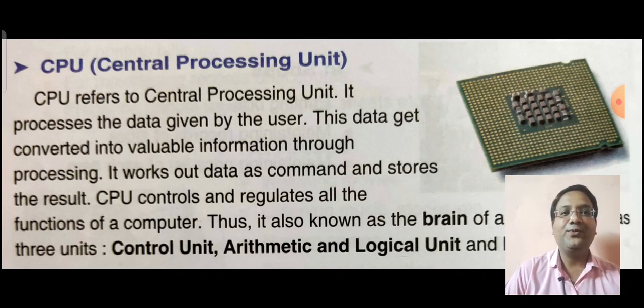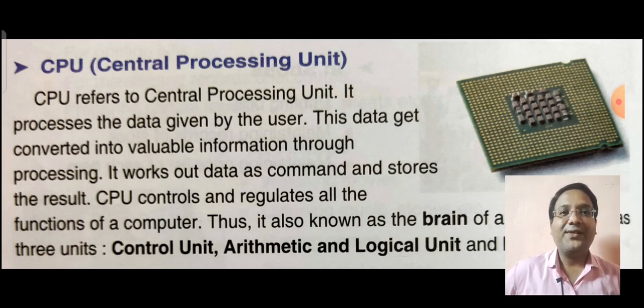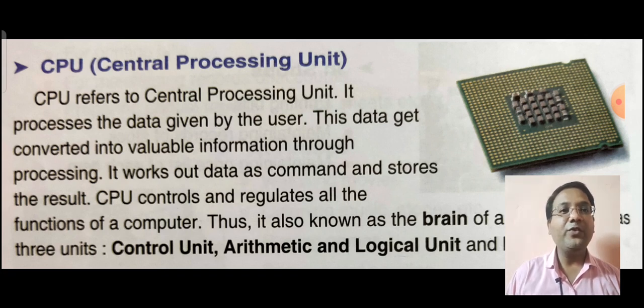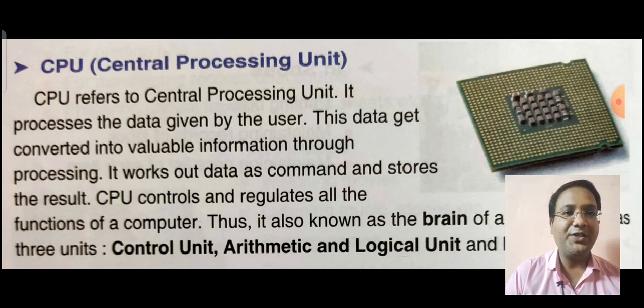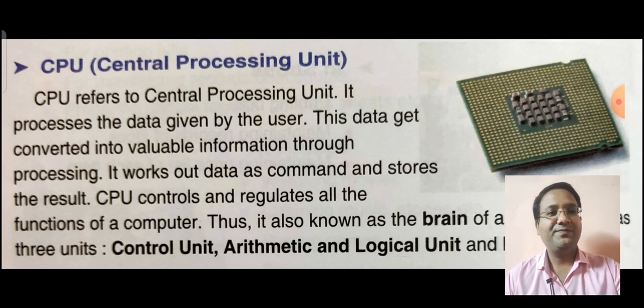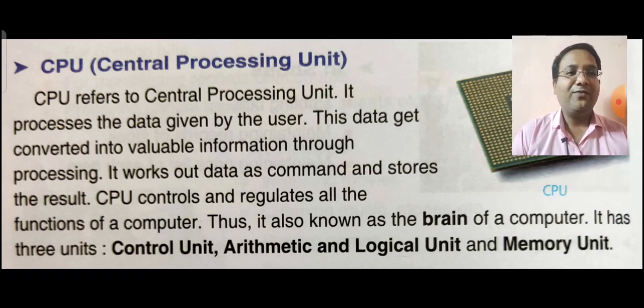Next is CPU. CPU stands for central processing unit. CPU is called the brain of the computer. CPU refers to central processing unit. It process the data given by the user. This data get converted into valuable information through processing. It works out data as command and stores the results. CPU controls and regulates all the functions of the computer. It is also known as the brain of the computer.